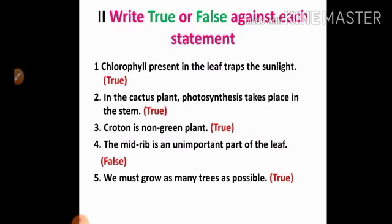Second question: write true or false against each statement. First one: chlorophyll present in the leaf traps the sunlight — true. Second one: in the cactus plant, photosynthesis takes place in the stem — true. Third one: croton is a non-green plant — true. Fourth one: the midrib is an unimportant part of the leaf — false, because the midrib is the main vein going through the center of the leaf. Fifth one: we must grow as many trees as possible — true.